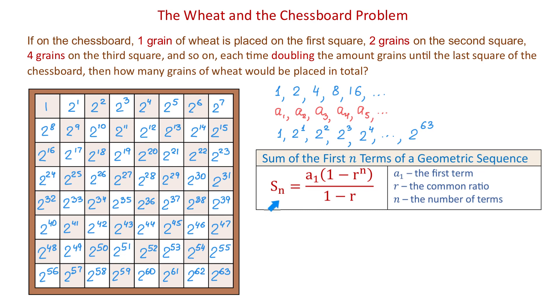The formula is S sub n equals A sub 1 times 1 minus r to the n's power over 1 minus r.